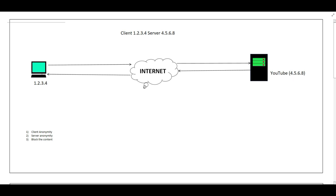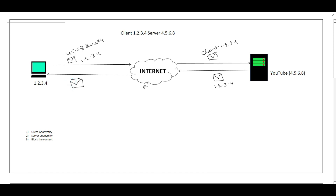The client wants to watch a video, so he sends a request to the internet. The client knows the YouTube server IP, so the request message goes to 4.5.6.8 with the client IP 1.2.3.4. The same request reaches the server, and the server receives the client IP as well. The server sends back the response to the client, and the client receives the response from the YouTube server at 4.5.6.8. So the client knows the server address and the server also knows the client address.